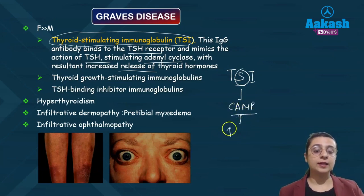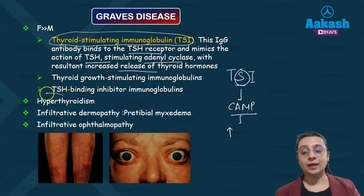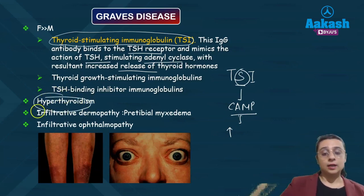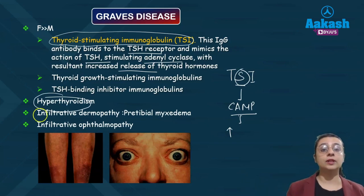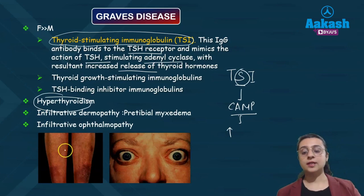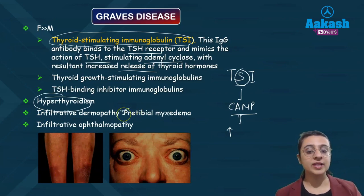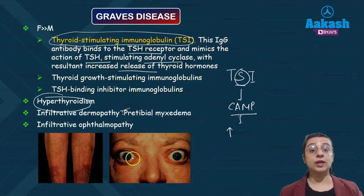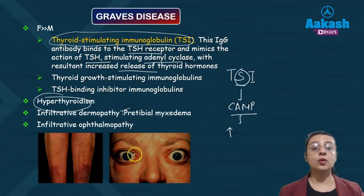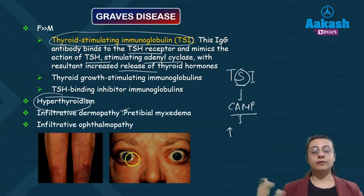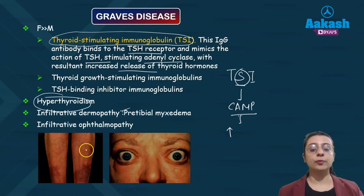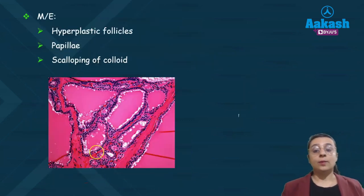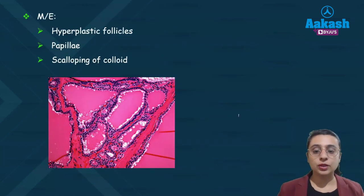Graves disease results in hyperthyroidism with two classic clinical features: infiltrative dermopathy (pre-tibial myxedema) and infiltrative ophthalmopathy, caused by accumulation of mucopolysaccharides in the retro-orbital connective tissue, producing a typical staring gaze.